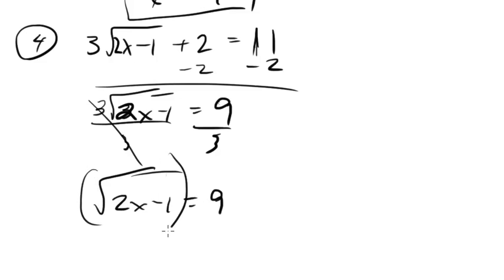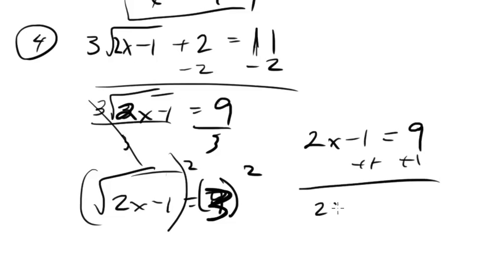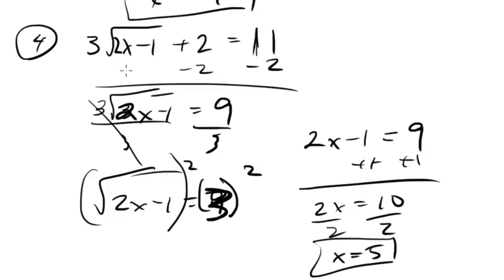Now I'm going to square both sides. This is going to be 2x minus 1 equals 9. Add 1 to both sides, I'm going to get 2x equals 10, divide both sides by 2, x equals 5, and there's your answer. So these radical expressions, they look scary, but just follow the rules. Unpack it piece by piece, and you'll be all ready to go.